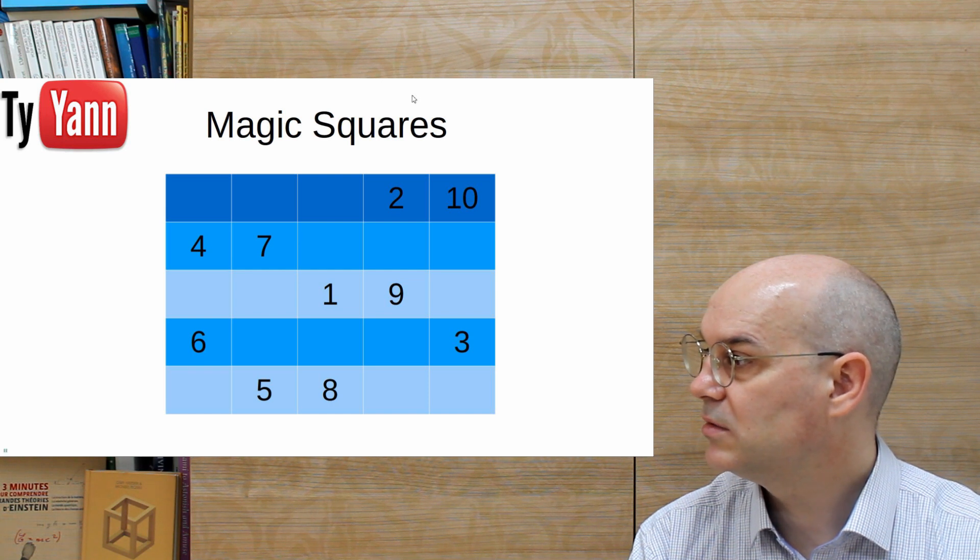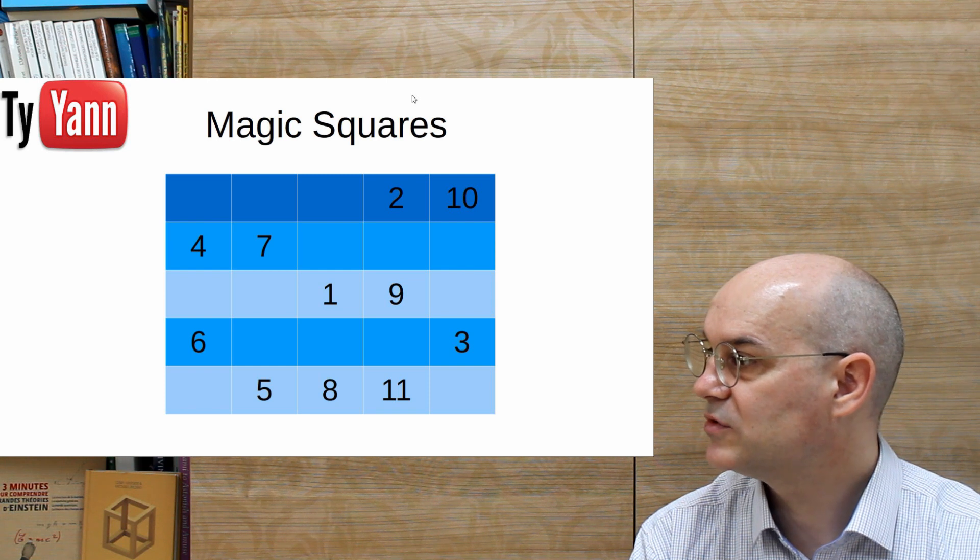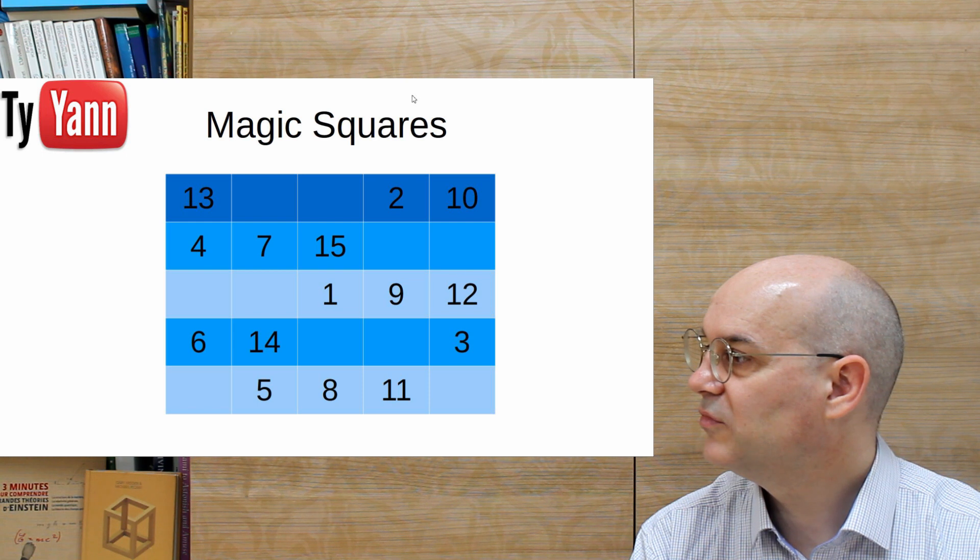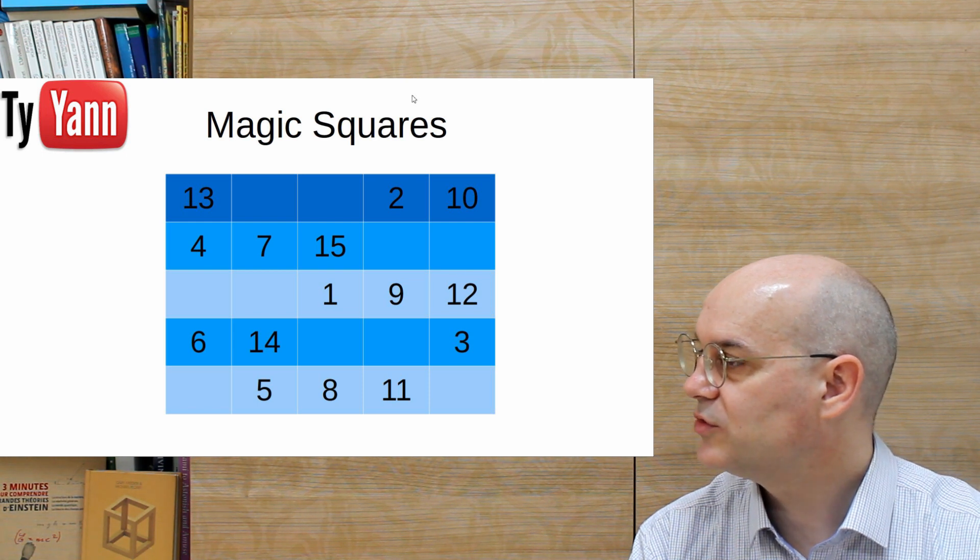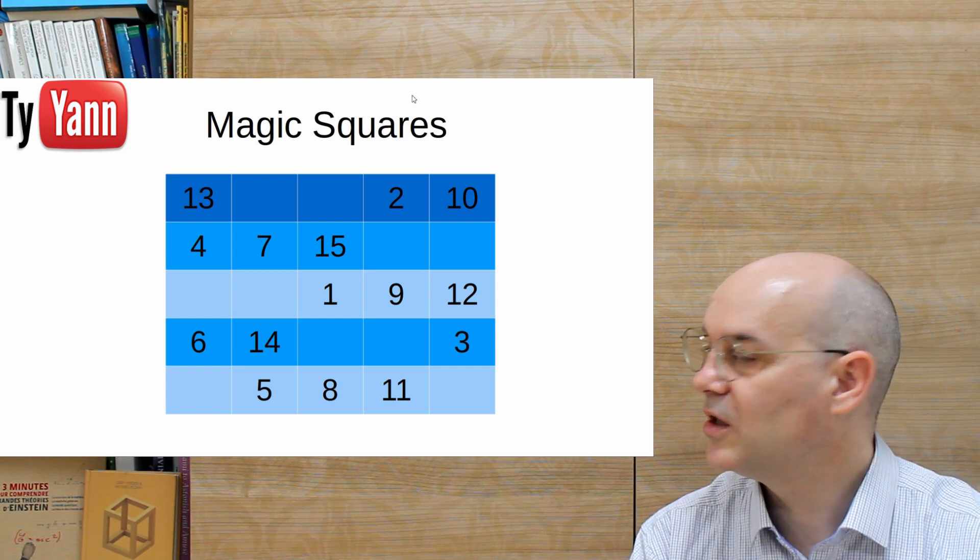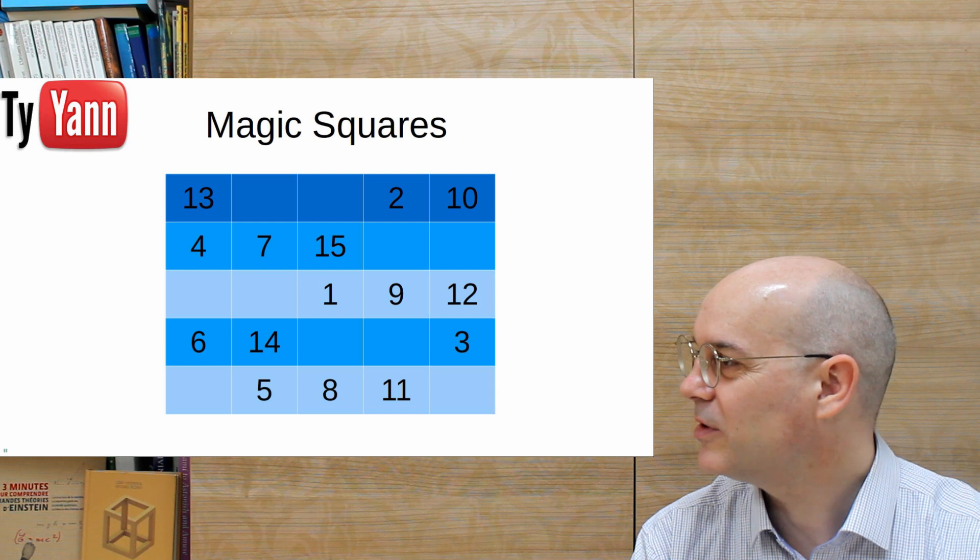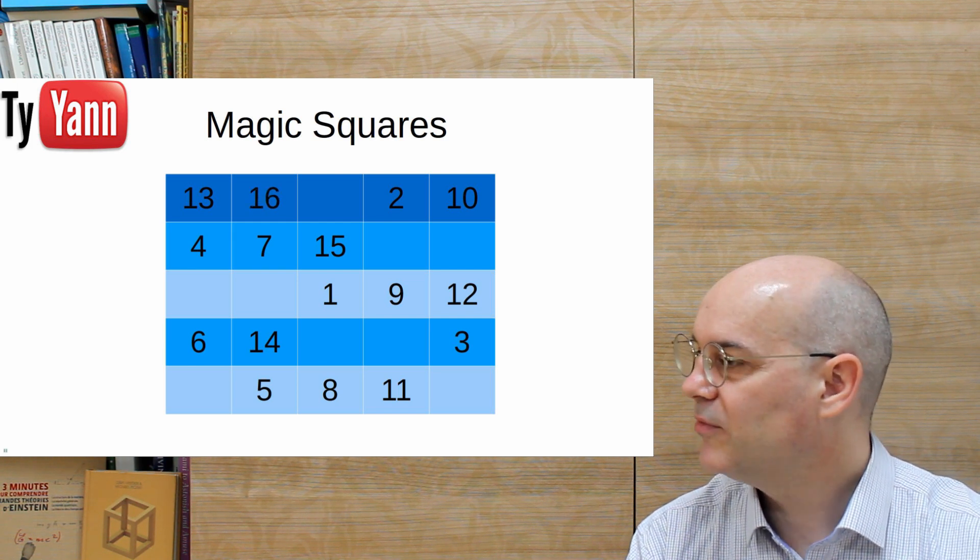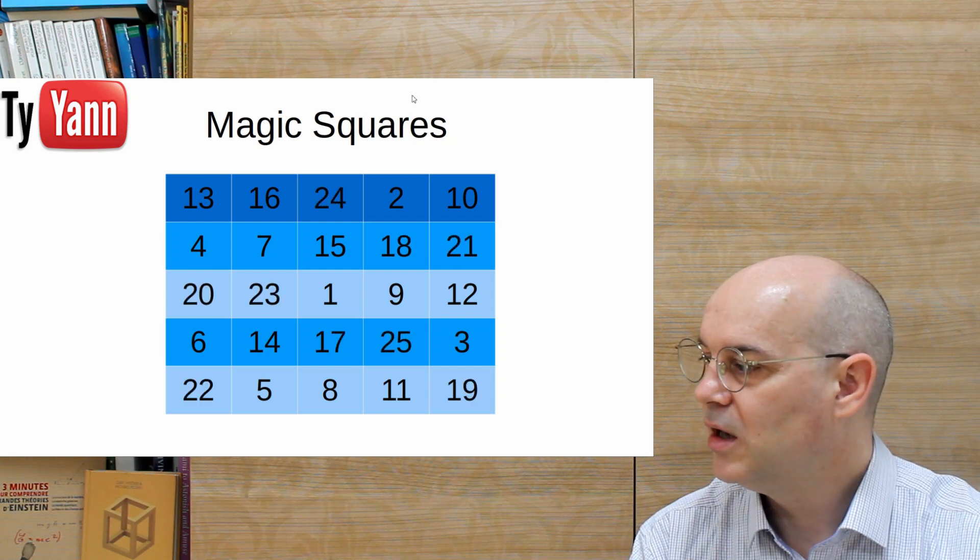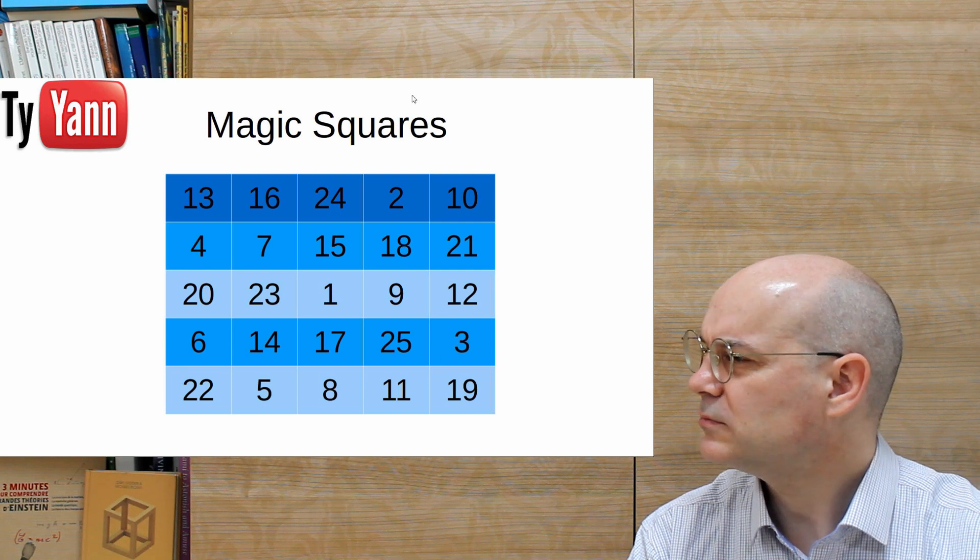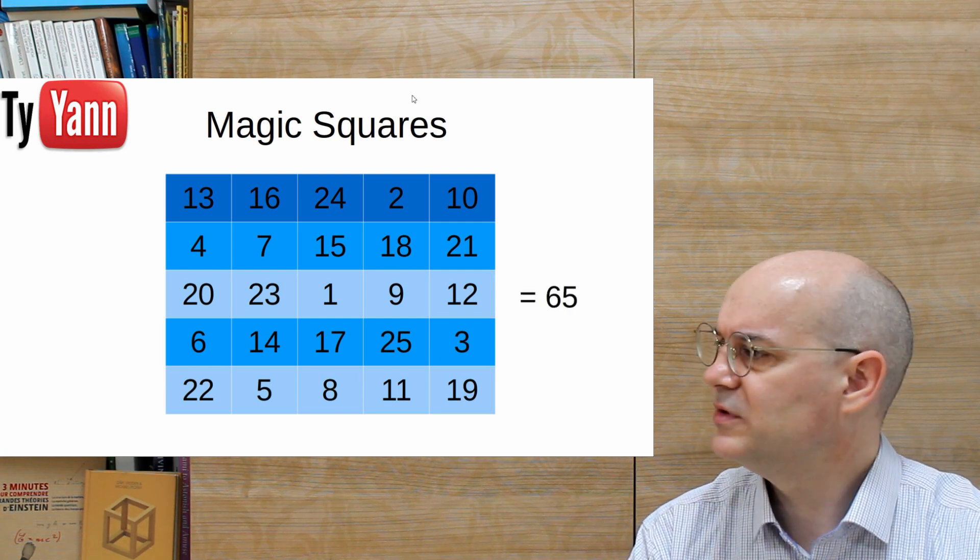And then we keep going. Put the 11 because we have to. And then at 15, we're also blocked by the number 11. So we put the 16 up and left. And we keep doing everything. And we're done. So we have a pan-magic square with a magic constant equals to 65.